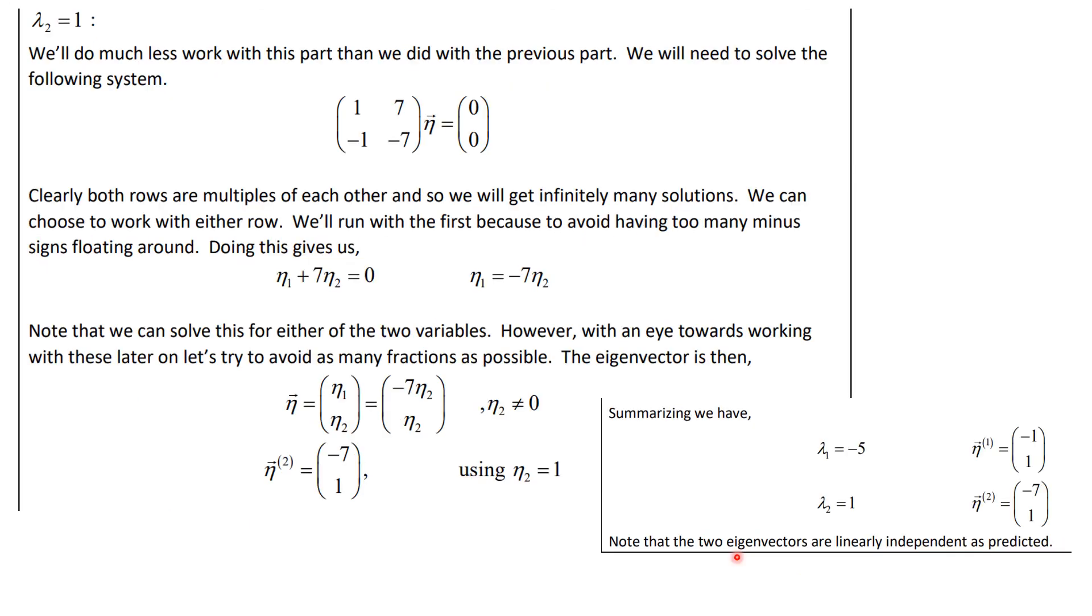This is for the next eigenvector, we call it lambda 2, and this is equal to 1. We substitute 1 in there and we set up this equation again, setting it equal to zero. Now this time it's going to be eta 1 plus 7 eta 2 is equal to zero. That means that eta 1 is equal to minus 7 eta 2. And you set that up like this, and if you take eta 2 to be 1, you get that this is the vector. So summarizing, we have lambda equal minus 5 gives us lambda 1 gives us this first eigenvector, and lambda 2 is 1, and that gives us the second one. And note that they're not multiples of each other. That means they're linearly independent.